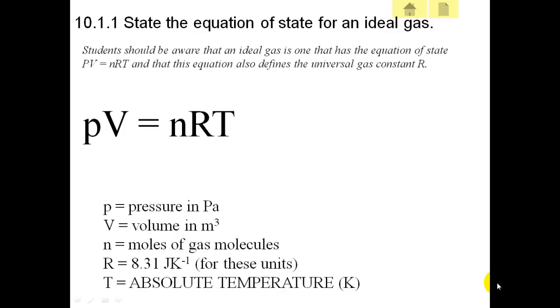State the equation of state for an ideal gas. This is the equation of state. You may have seen it before: PV equals nRT. P is pressure in pascals. The volume is volume in meters cubed. N is the number of gas molecules. R is the gas constant. T is the absolute temperature.